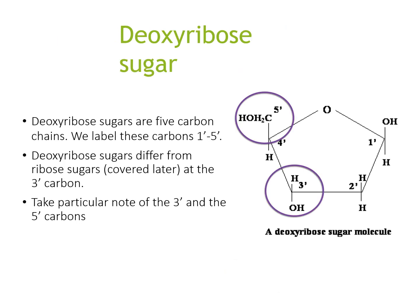The sugar can be either deoxyribose or ribose. Deoxyribose sugars are five-carbon chains, and we label these carbons one to five. Deoxyribose sugars differ from ribose sugars at the 2' carbon. Please note that the 3' and 5' carbons are very important.